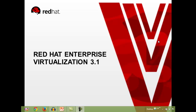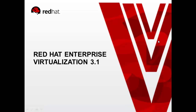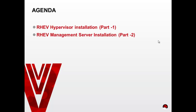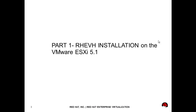Hi friends, welcome to another session of VMware Professional. Today I'm going to show how to install a hypervisor on a nested VM using a VMware ESXi 5.1 environment. I'm going to show how to install another hypervisor. In my future videos I will show how to install the management server. Today, part one will be a raw edge installation on VMware ESXi 5.1.